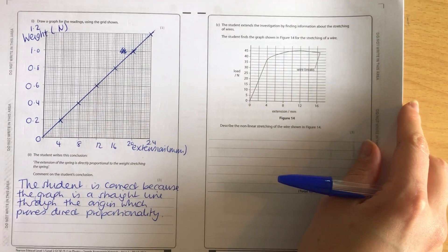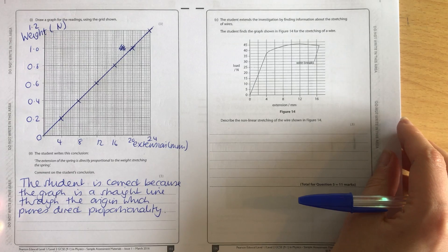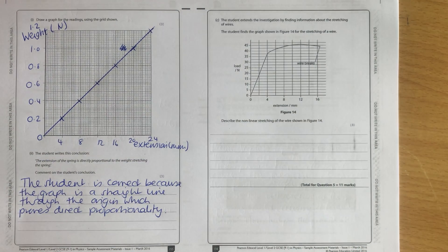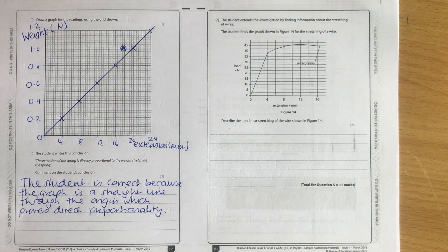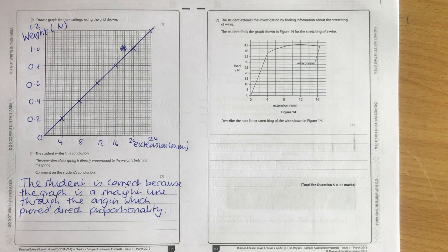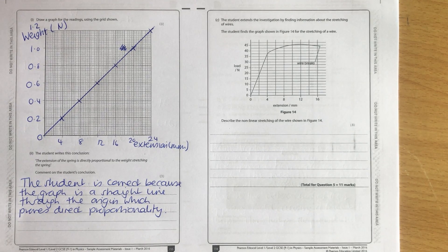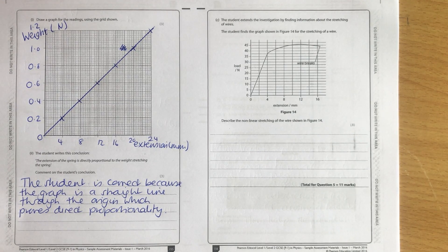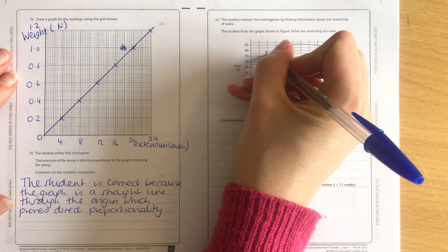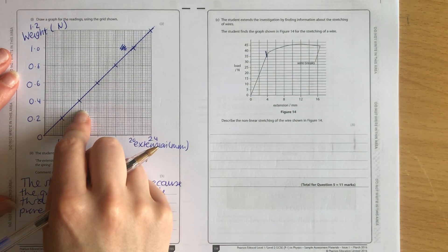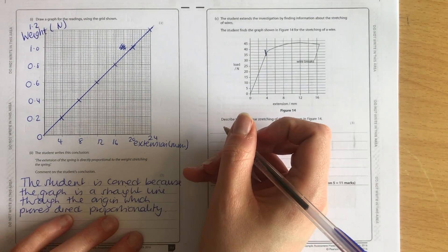Moving on to the final part of this question, part C. The student extends the investigation by finding information about the stretching of wires, so not a spring here. The student finds a graph shown in figure 14 for the stretching of a wire. Describe the non-linear stretching of the wire shown in figure 14. Now the non-linear stretching starts at this point here. This is linear, just like this one, and it becomes non-linear.